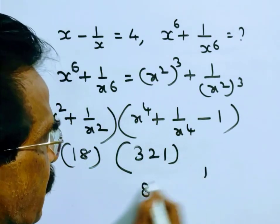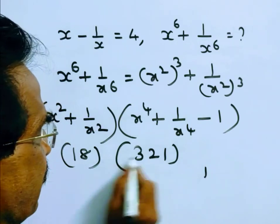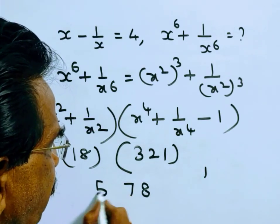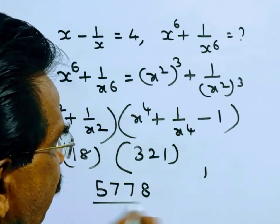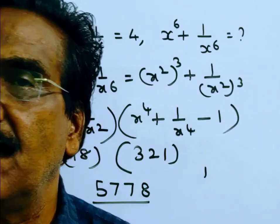Now computing the final result: 18 squared is 324, plus 1 gives 325. Then 18 into 54 plus 3 gives 57. Putting it all together, 5778 is your answer, friends.